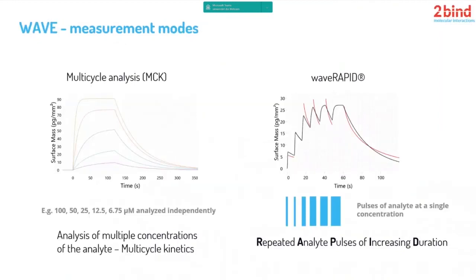Besides other interesting measurement modes like off-rate ranking, Wave Delta allows two interesting measurement modes. The first is multicycle kinetics — a more classical approach also known from SPR — where each concentration of analyte is analyzed independently. Different concentration sets are summarized to obtain kinetic KDs as well as equilibrium KDs.